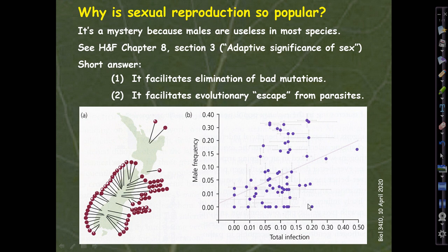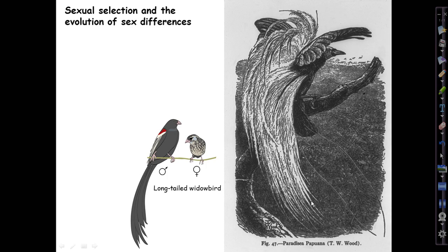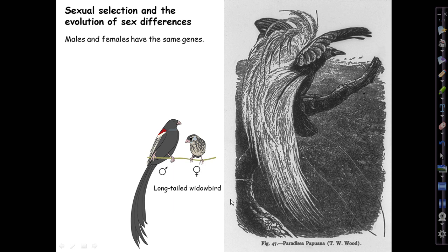That evidence, and other lines of evidence gathered by the Lively team, make a very convincing case that defense against trematode parasites is the force maintaining positive frequencies of sexual reproduction — which involves making males, the easy-to-measure variable, which is why the figure is presented that way. Given sex, sexual selection is likely to occur and lead to the evolution of sex differences, which is what we're going to talk about in this lecture.